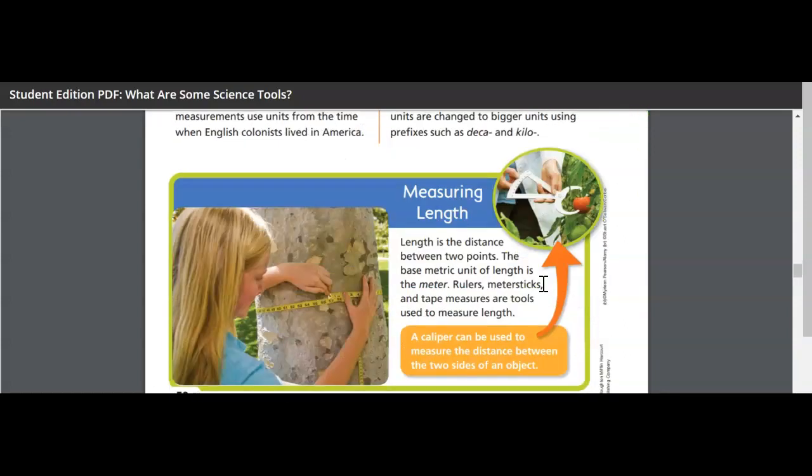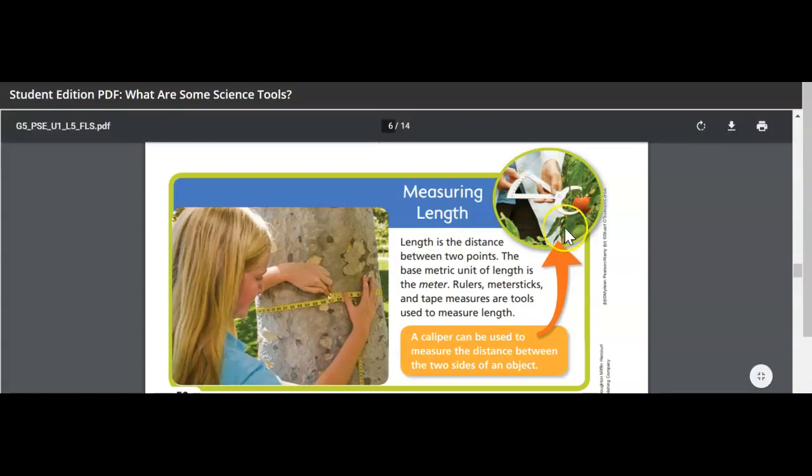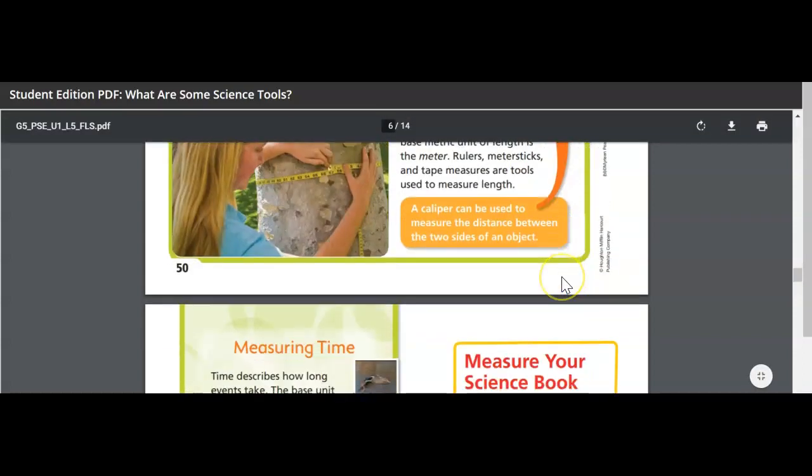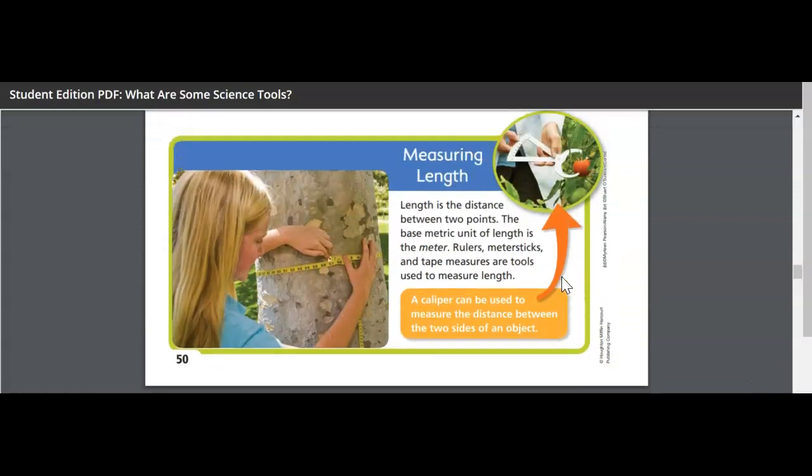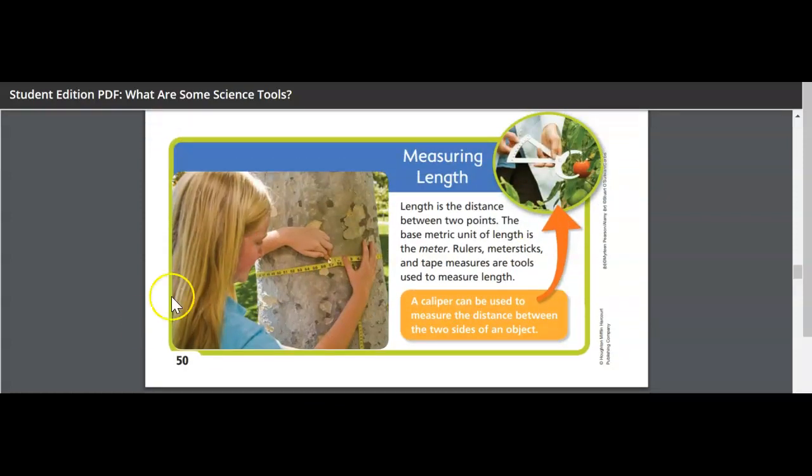Measuring length. Length is the distance between two points. You all know that. The base metric unit of length is the meter. Rulers, meter sticks, and tape measures are tools used to measure length. A caliper can be used to measure the distance between the two sides of an object. That's the caliper up here. So that wraps up page 50. I'm going to come back for part two in another video.